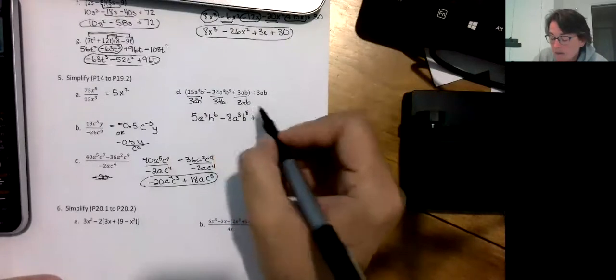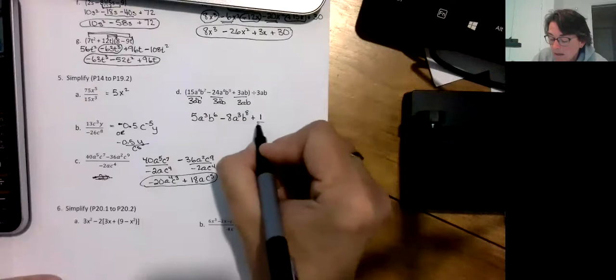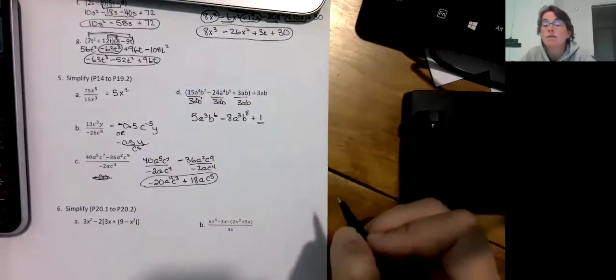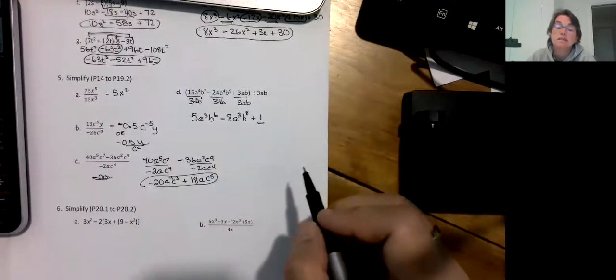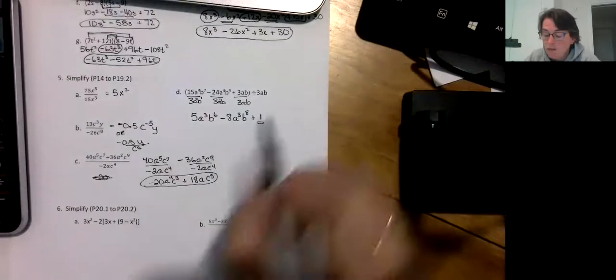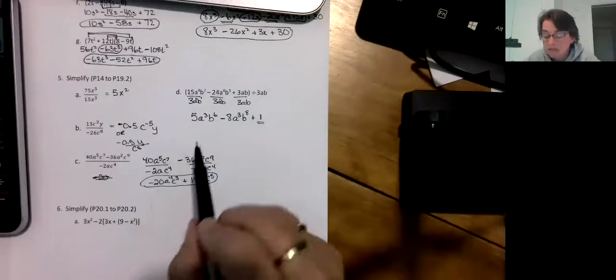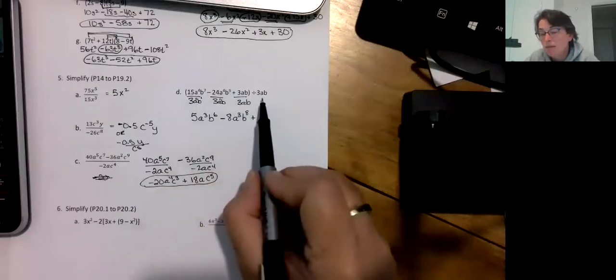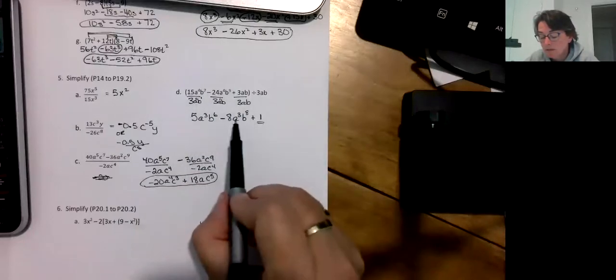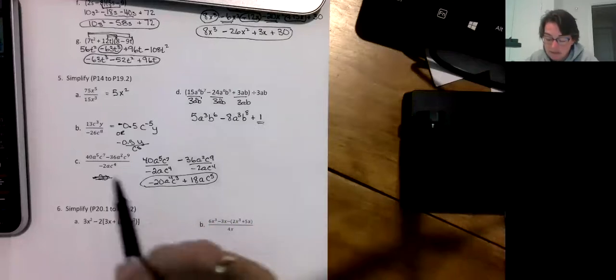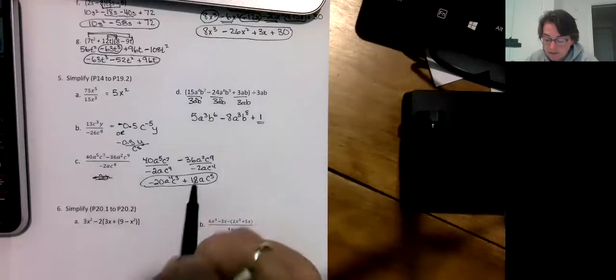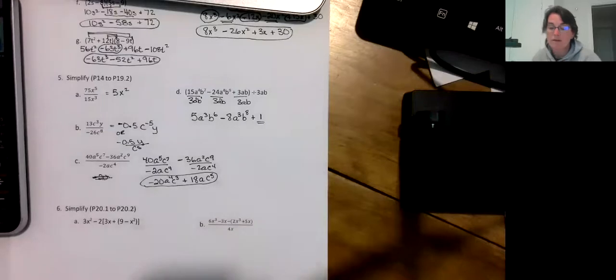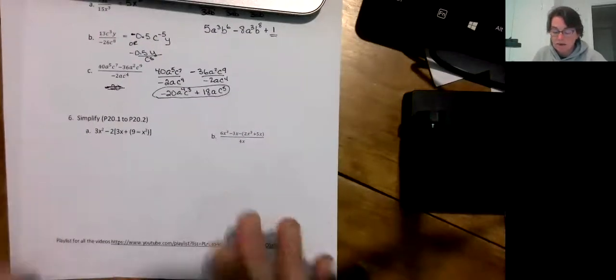Plus 3ab divided by 3ab is 1. Make sure you got that one there, that was the trick question in this section. One thing you can do when you're doing this kind of division, if there are three terms and you're dividing by a monomial, there should be three terms in your final answer. There were two here, there's two there. That was division.